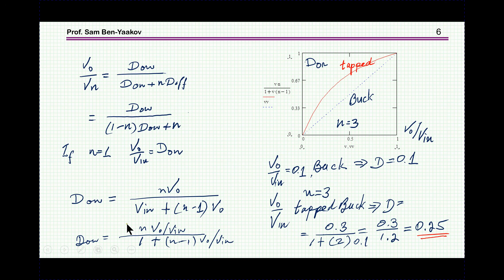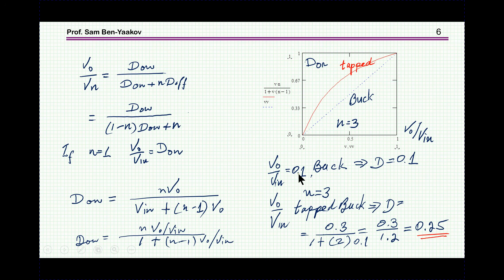I've plotted D_on as a function of V_out/V_in. The regular buck gives a straight line, while the tapped inductor case (the red curve) shows that for any given ratio, we get a higher D_on value. For example, if V_out/V_in is 0.1, the regular buck duty cycle is 0.1, but for a tapped inductor with N equal to 3, the duty cycle becomes 0.25 — a wider pulse for the same voltage ratio. This means lower ripple and lower RMS current, which is the objective.